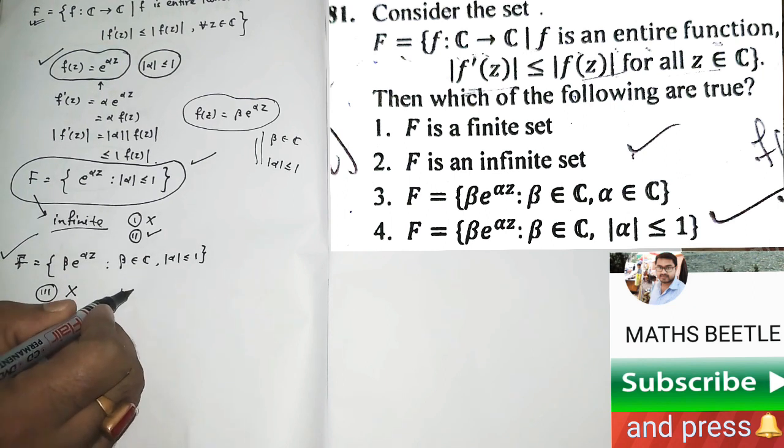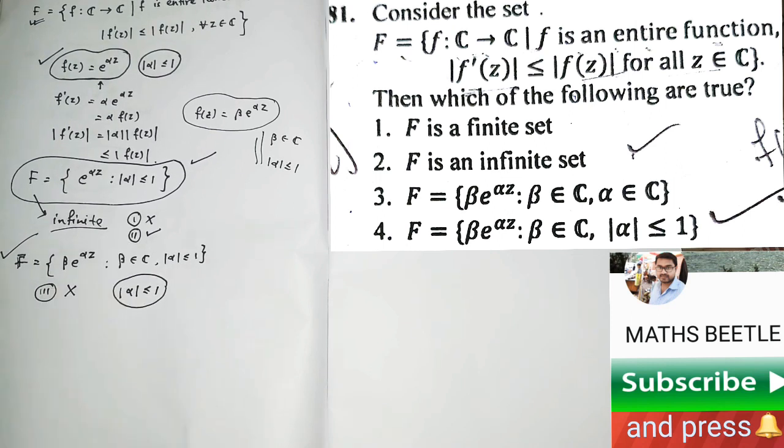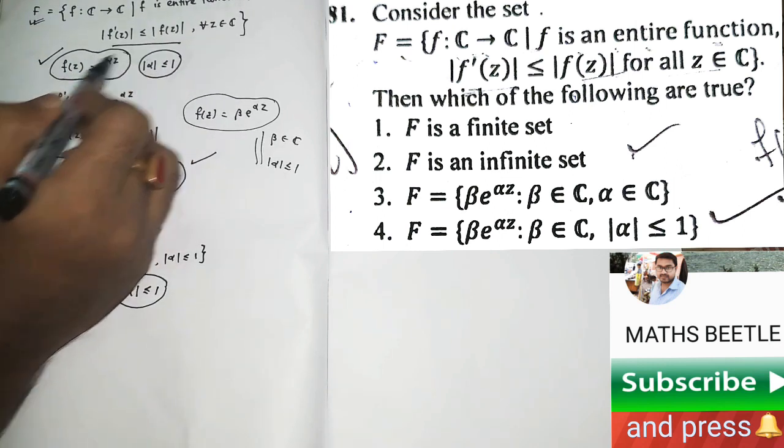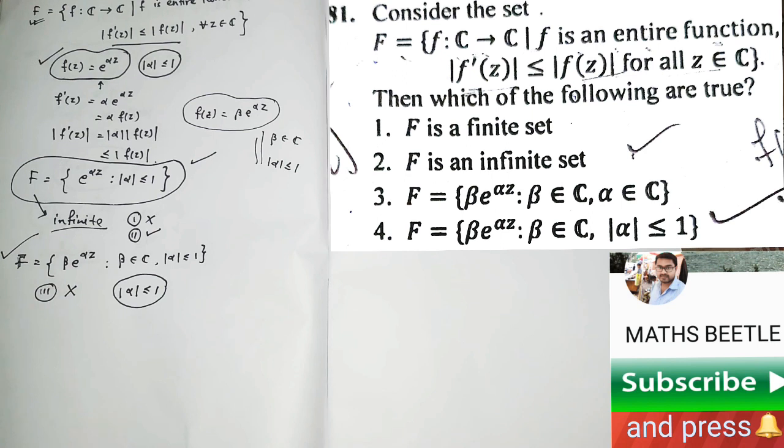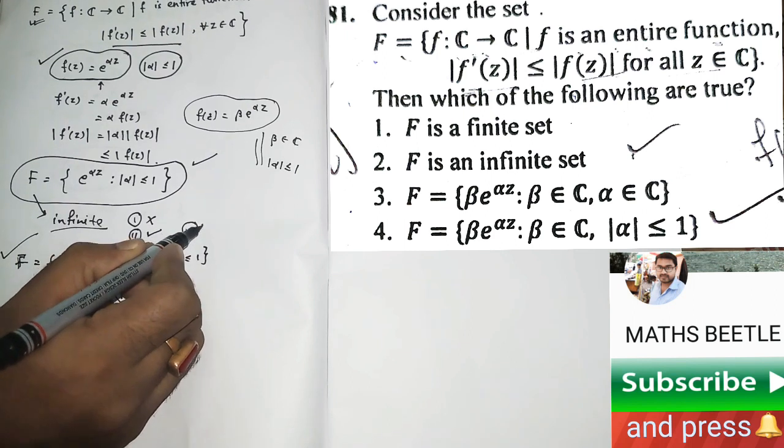Because it is necessary to have mod of alpha less or equal to one to fulfill this condition. So the finally correct options are second and fourth one. Thank you.